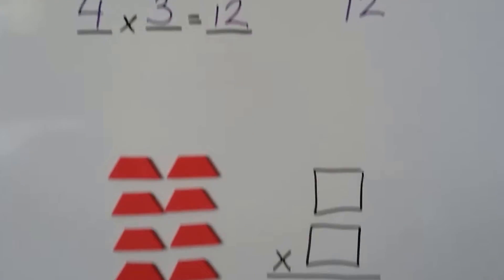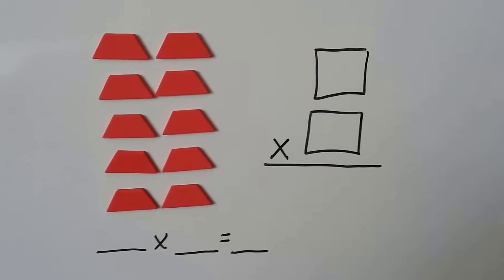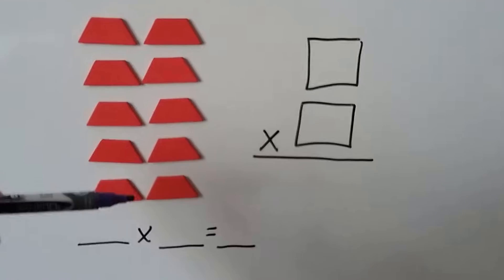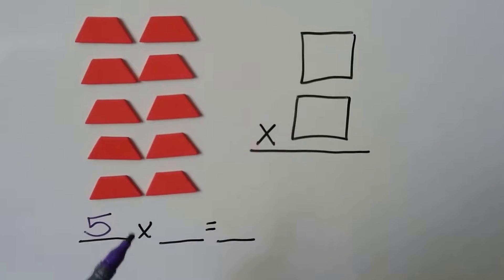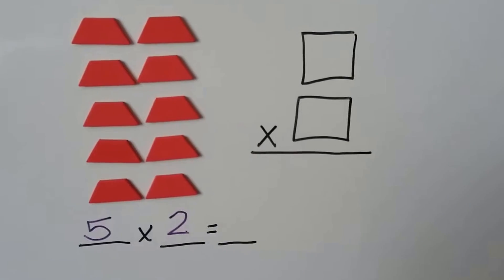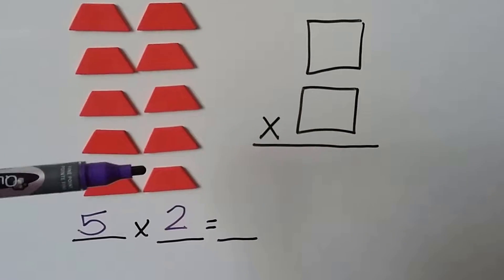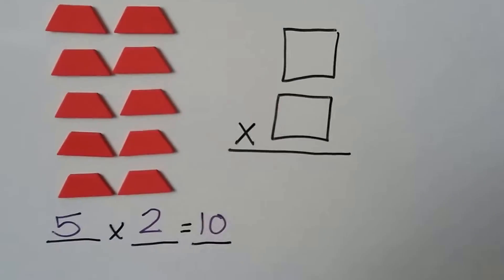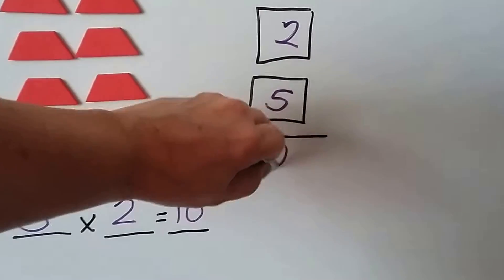Let's try another one. Let's write our number sentence first. How many groups do we see? How many rows? One, two, three, four, five. And how many are in each group? Two. Five times two — we can skip count by two: two, four, six, eight, ten. We can also write this as two times five is equal to ten.